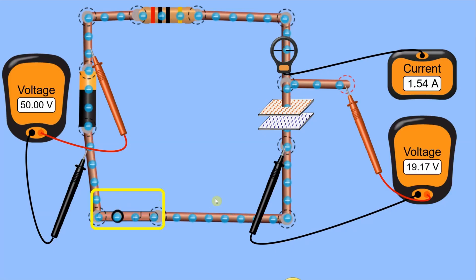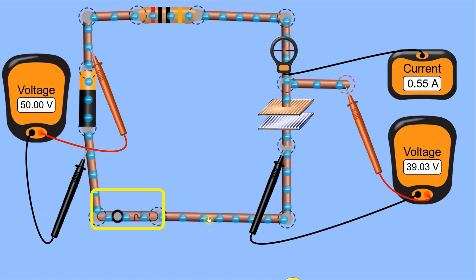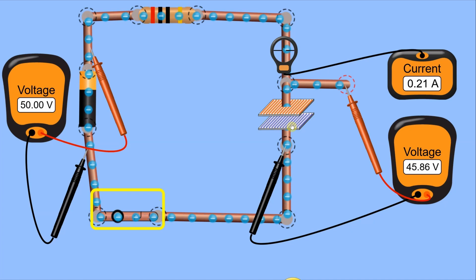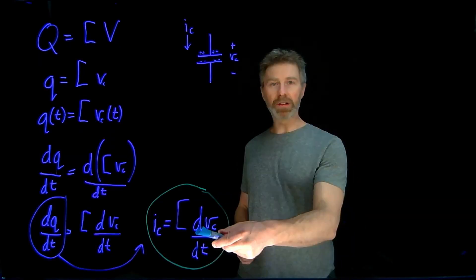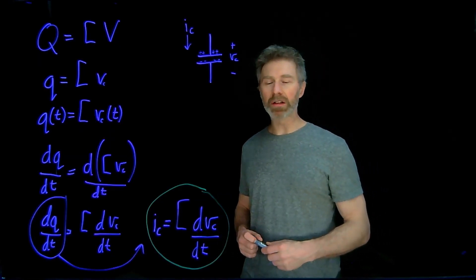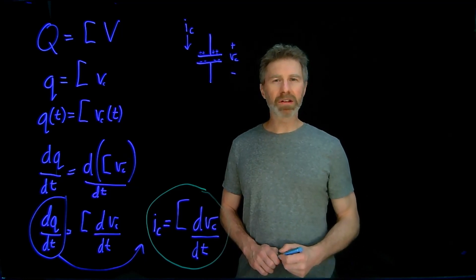Going back to the animation, you can see that the voltage is changing, which according to the equation we just derived means we're going to have some non-zero amount of current — and you can see that in the animation. In another one of my capacitor videos, we'll determine the exact relationship between voltage and current for circuits with a resistor, capacitor, and a switch. But for now, to develop a better understanding of the equation IC = C·dVc/dt, let's look at a simpler example.